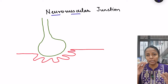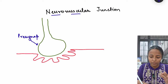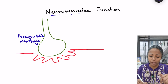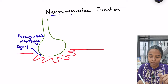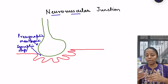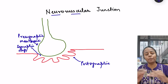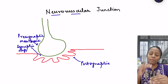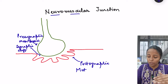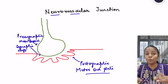Each neuromuscular junction has three parts: the presynaptic membrane, which is formed by the neuron terminal and is located before the synapse; the synaptic cleft, which is the space between the presynaptic and postsynaptic membranes; and the postsynaptic membrane, formed by the muscle membrane. The thickened area of the muscle fiber where the neuron makes contact is called the motor end plate. The potential change occurring on this motor end plate is known as the end plate potential.